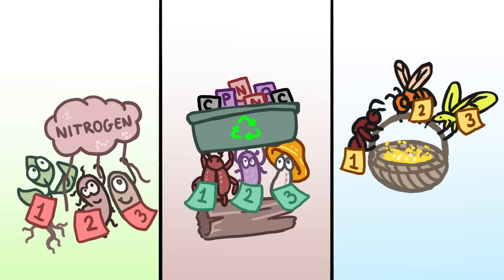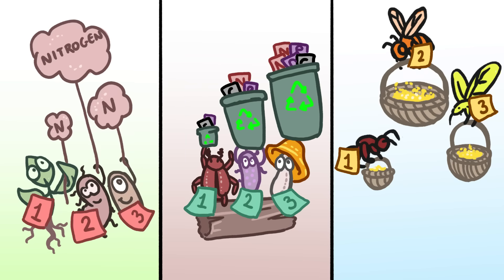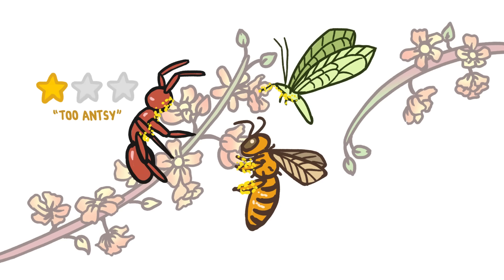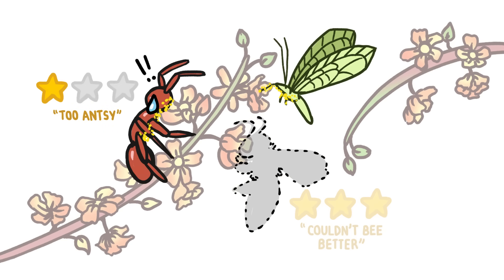Even where ecological redundancy is high, organisms are different enough that they aren't totally interchangeable. For instance, ants are only so-so at pollination. So if a more effective pollinator disappeared, ants wouldn't be able to totally compensate. But they could carry on pollination to some extent, helping stave off catastrophe.